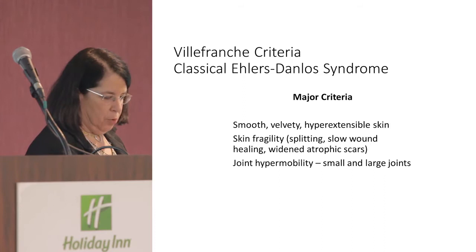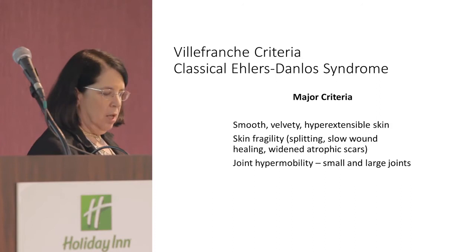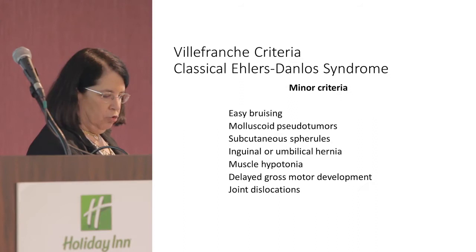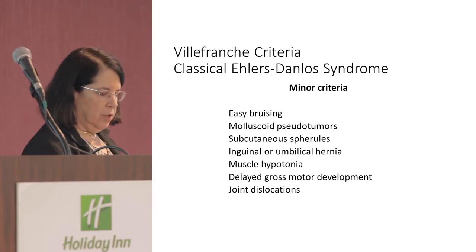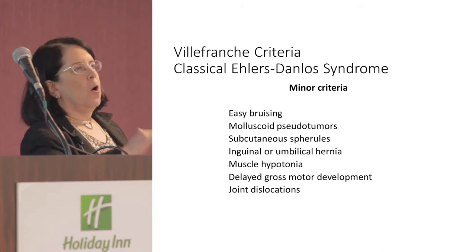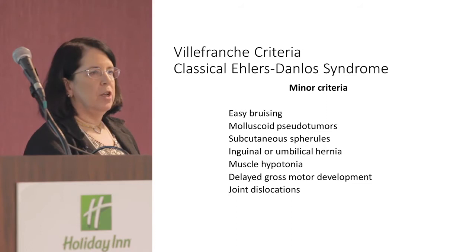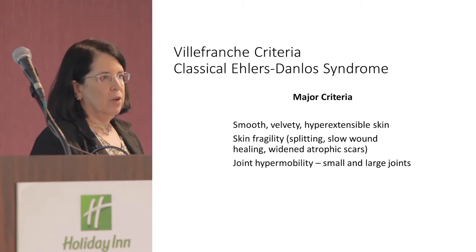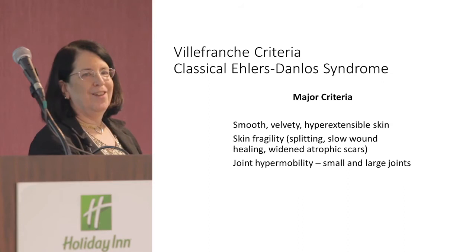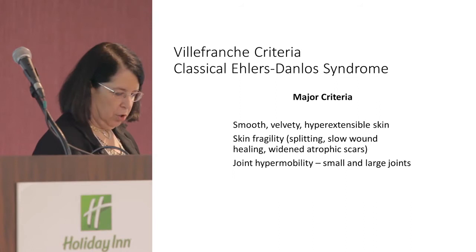The last published criteria for classical EDS included the major criteria of smooth velvety hyperextensible skin, skin fragility with splitting and slow wound healing, widened atrophic scars, and joint hypermobility of small and large joints. The Ghent group found that if patients had all three major criteria they were more than 90% likely to have a type 5 collagen mutation; with only two, the probability drops significantly, so molecular testing is generally not pursued.